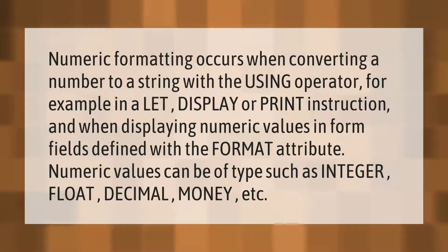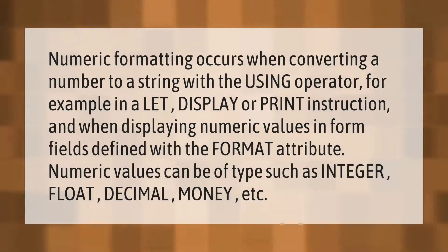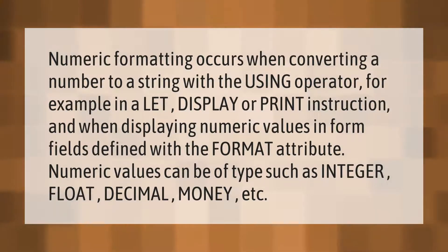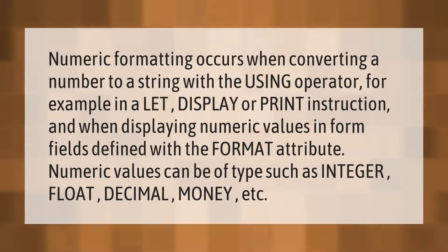Numeric formatting occurs when converting a number to a string with the using operator — for example, in a let, display, or print instruction — and when displaying numeric values in form fields defined with the format attribute. Numeric values can be of types such as integer, float, decimal, money, etc.